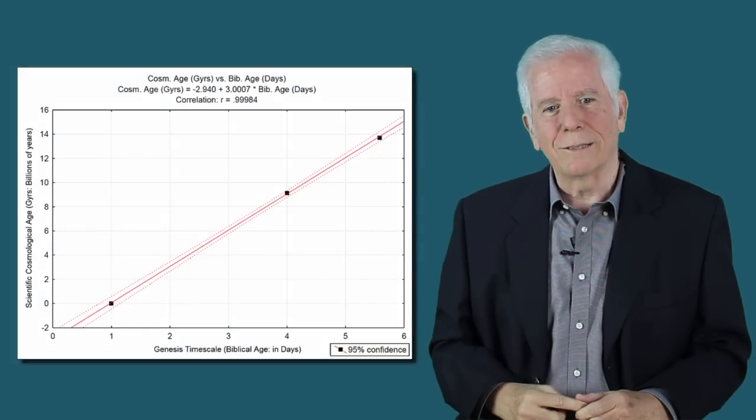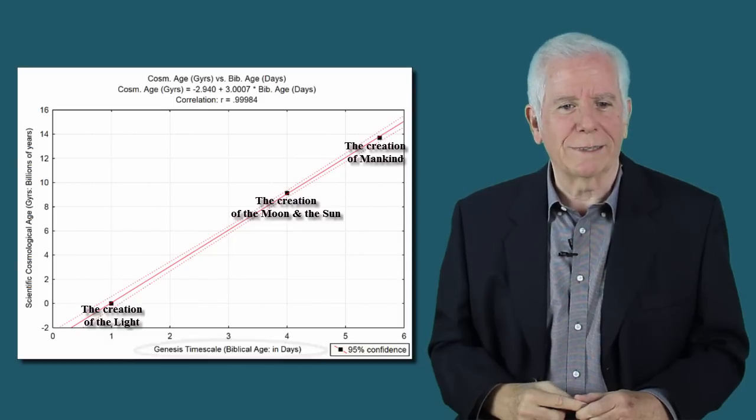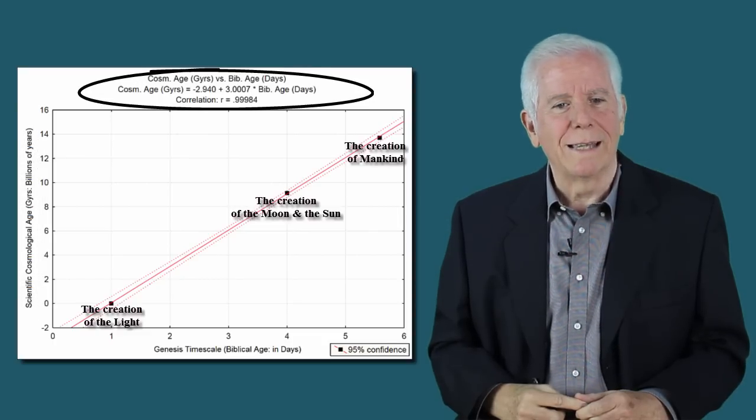In summary, numeric values of Biblical Hebrew words have been scientifically shown to contain scientific information known to us only in the last century or so. What conclusion may one draw from these stunning results? And yes, one more surprise. Statistical analysis relating to the creation narrative as unfolding in the first chapter of Genesis has shown to be consistent with the scientific cosmological timeline. Statistically highly significant results have been obtained.